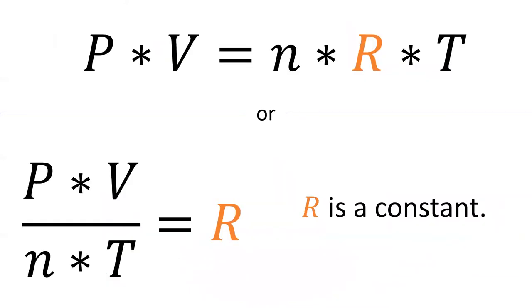There are many ways to write the ideal gas equation, but these are the two most common. I personally prefer the bottom representation best because it shows that pressure times volume divided by moles times temperature equals a constant, which is R, the ideal gas constant.